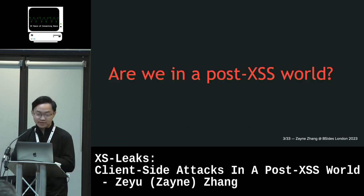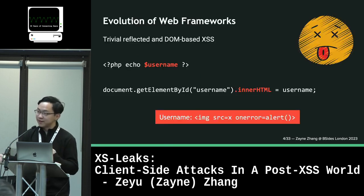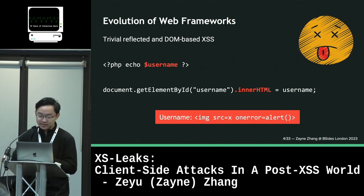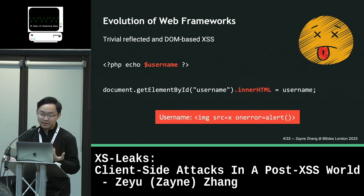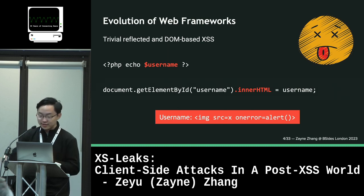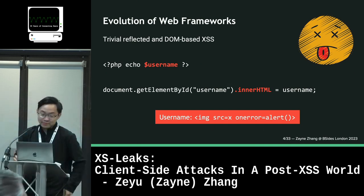The question we can start with is: are we in a post-XSS world? It used to be the case that we could achieve XSS really easily because web frameworks just weren't secure. You could just echo untrusted user input in PHP, and that could lead to XSS because HTML output isn't sanitized. There weren't very good frameworks for manipulating client-side elements, so people had to set innerHTML by themselves, which could lead to a lot of mistakes. DOM XSS and reflected XSS were just really common because frameworks weren't secure.